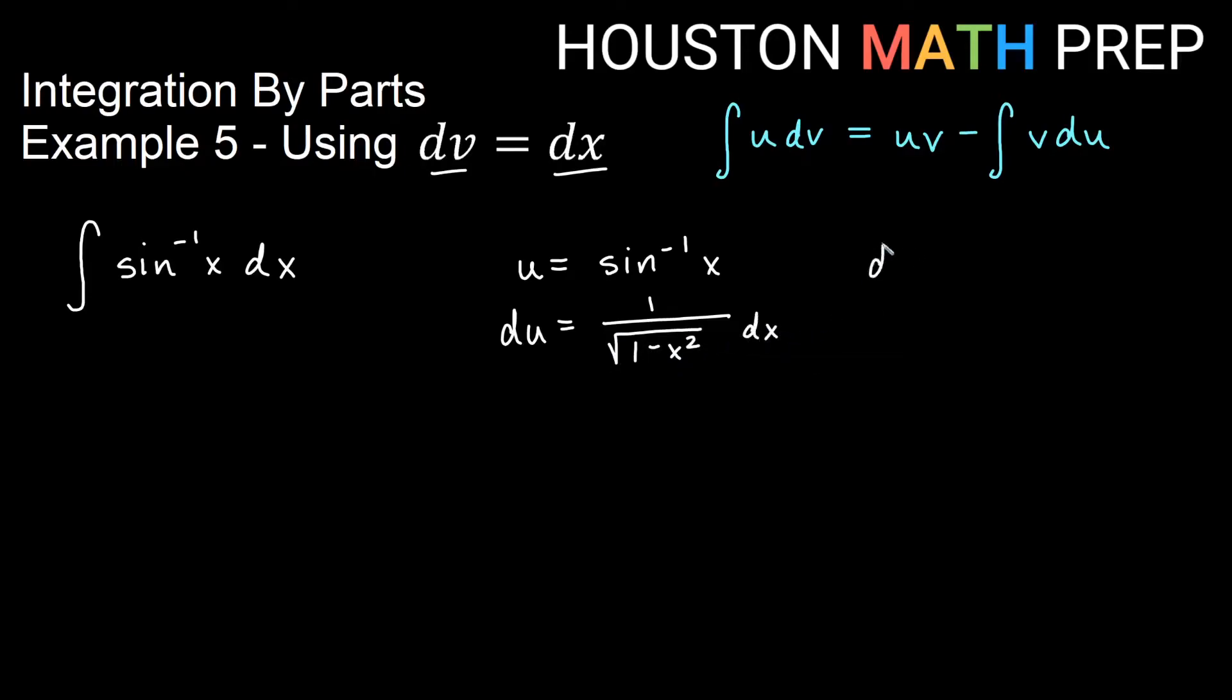And if that's the case, then we just choose dv to be the remaining dx or 1 dx, if you want to think of it that way. And then what is the antiderivative of 1 dx? Well, it would just be x. So we use this idea of only choosing dv to be dx when we want to get around taking the antiderivative of something that we're just not sure about.